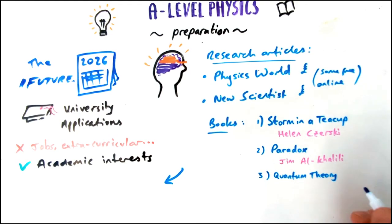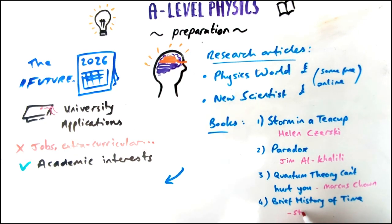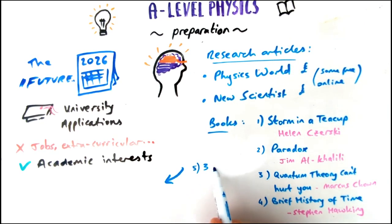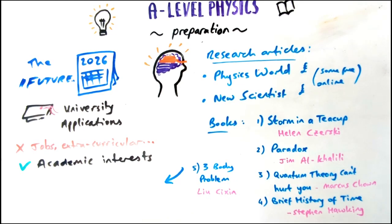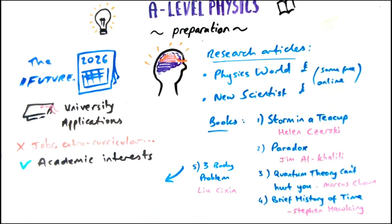There's a book called Quantum Theory Can't Hurt You, which starts you off on the idea of quantum theory, which is kind of these mind-bending ideas in physics. A Brief History of Time by Stephen Hawking is actually quite high level, but if you're really up for a challenge, that's a good book to read. My favorite fiction book at the minute is called The Three-Body Problem. It's a trilogy by Liu Cixin, which is really interesting, with lots about space and lots about physics beyond what you might know already.